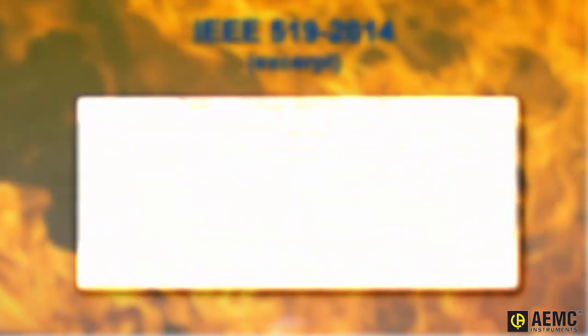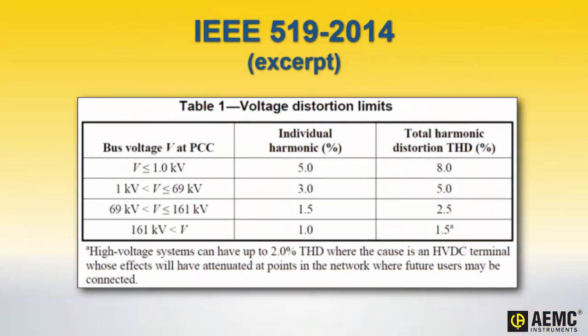THD can also raise regulatory considerations. A number of guidelines exist, such as IEEE 519-2014, that define how much harmonic distortion is allowed for certain types of facilities. Strict adherence to these specifications can be an essential business requirement for many organizations.